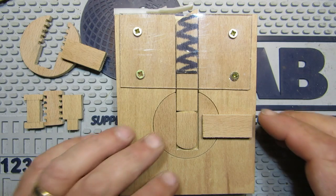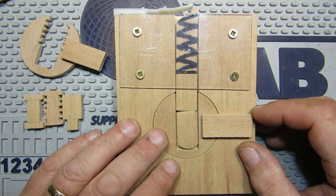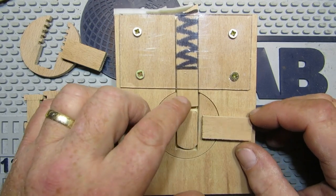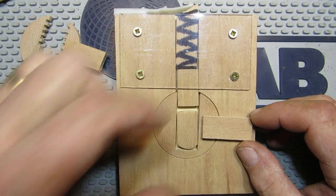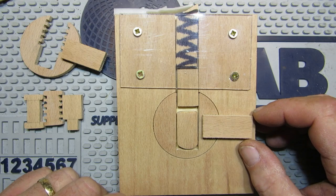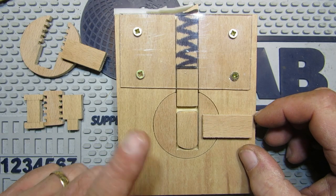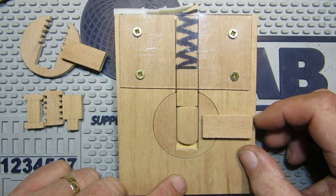So effectively this is the inside of a lock. We have a key pin, a driver pin, and a spring. Just for today, this bit here is our tension wrench and my finger is going to be our pick.